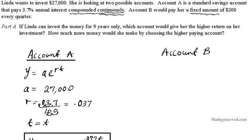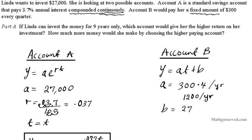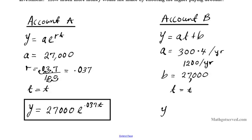We're looking at growth per year here, so we have to be a little careful. We're going to use the equation y equals at plus b. A is the fixed growth amount, which is $300 per quarter. Per year, we have to multiply by four because there are four quarters in a year — so it's 300 times 4, which is $1,200 a year. The initial starting amount is 27,000. So the growth model is y equals 1200t plus 27,000.